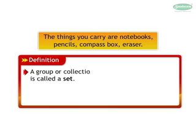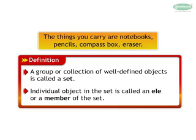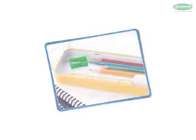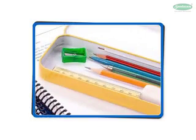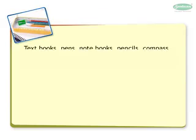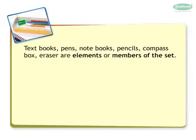A group or collection of well-defined objects is called a set. An individual object in the set is called an element or a member of the set. So, the objects present in the bag are called elements or members. Hence, textbooks, pens, notebooks, pencils, compass box, and eraser are elements or members of the set.